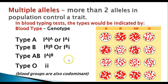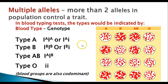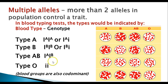The A and B alleles code for proteins on the surface of blood cells. Type A blood has antibodies against type B. Type B blood has antibodies against type A. Type AB has both antigens but no antibodies to either. Type O has no antigens but has antibodies against both A and B. These characteristics are used to determine blood types, and we'll talk more about that later.